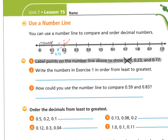Number two says write the numbers in exercise one in order from least to greatest. When I see that phrase 'least to greatest,' I should be thinking: which is the smallest and which is the biggest? Looking at my red dots on the screen, I can see that nine hundredths is my smallest number, so I'm starting with zero and nine hundredths, then zero and seventeen hundredths, and finally zero and twenty-three hundredths.